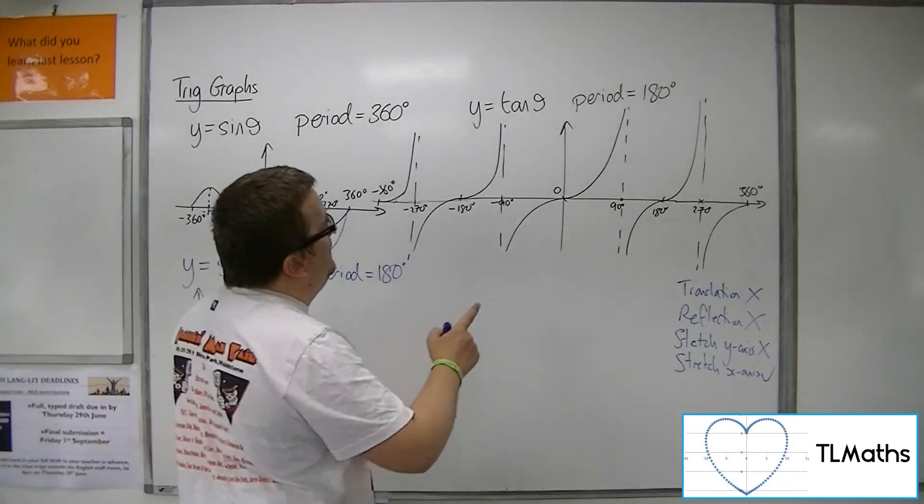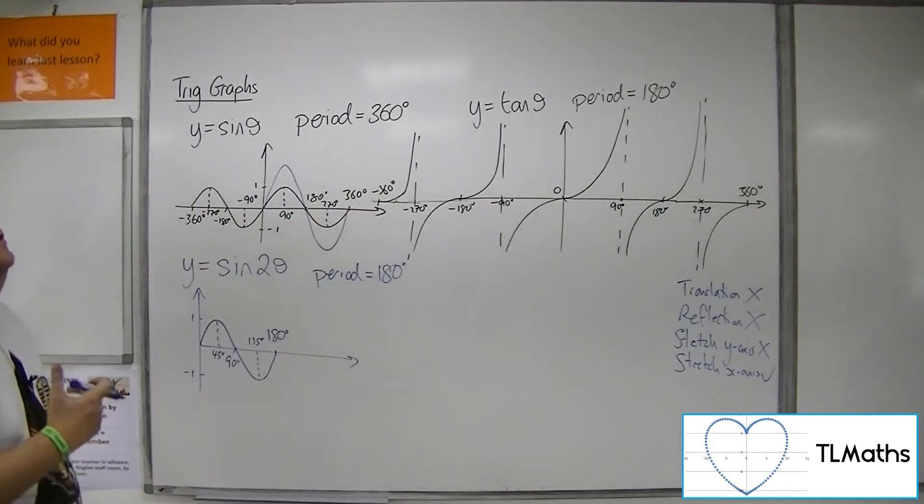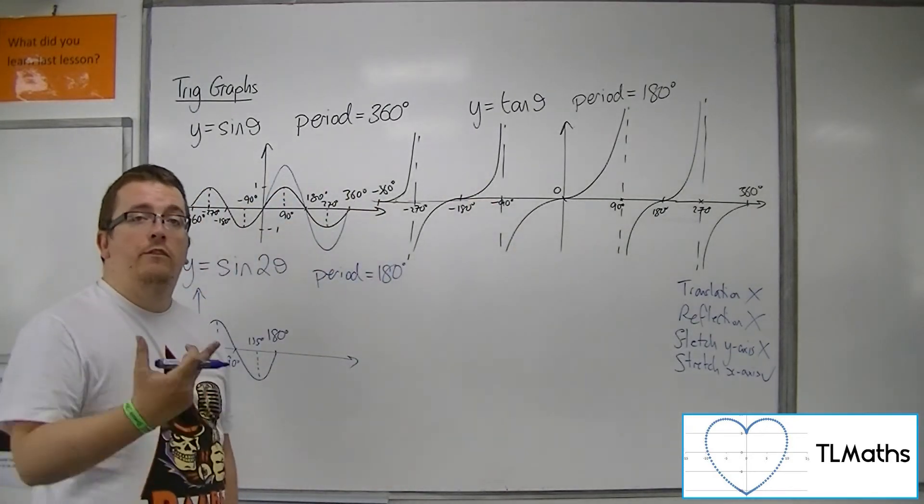And if I did the same for tan of 2 theta, then the period would also halve. I would have a period now of 90 degrees.